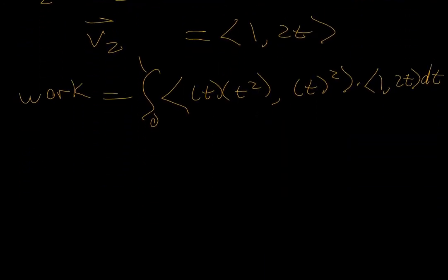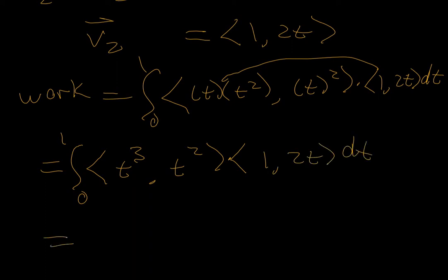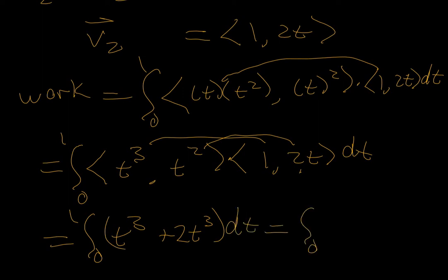I'll do a little bit of algebraic cleanup here. 0 to 1, t cubed, t squared dot product 1, 2t. So we get 1 times t cubed is t cubed plus 2t times t squared which is 2t cubed, and before I integrate it, let's just do combining these terms, 3t cubed with respect to t.